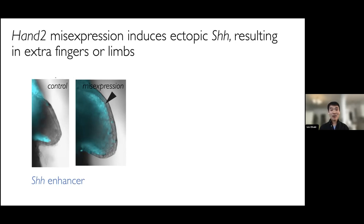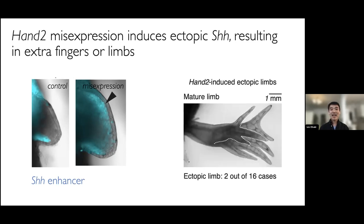But in rare cases, we were able to recover an axolotl-specific phenotype, which was the production of an entire ectopic limb from that misexpression site — you can see one example there. This shows us that HAND2 can indeed trigger sonic hedgehog expression, and that this is clearly critical for limb morphogenesis, because at the right dose and in the right place, it's able to generate a whole limb on its own.